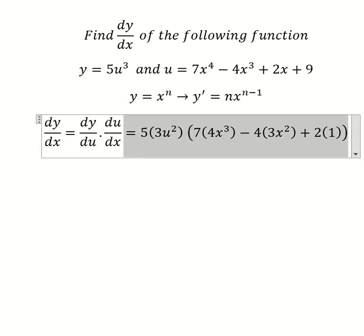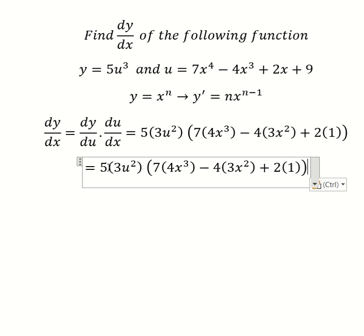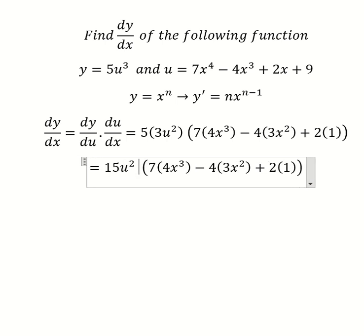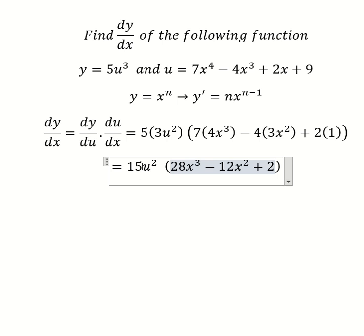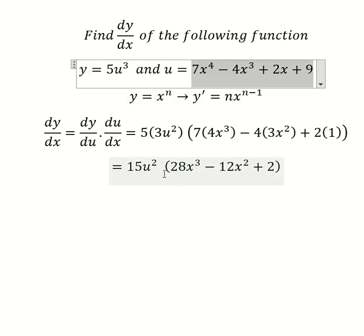For the multiplication: 5 and 3 gives us 15, 7 and 4 gives us 28, 4 and 3 gives us 12. This is about multiplying the coefficients together.